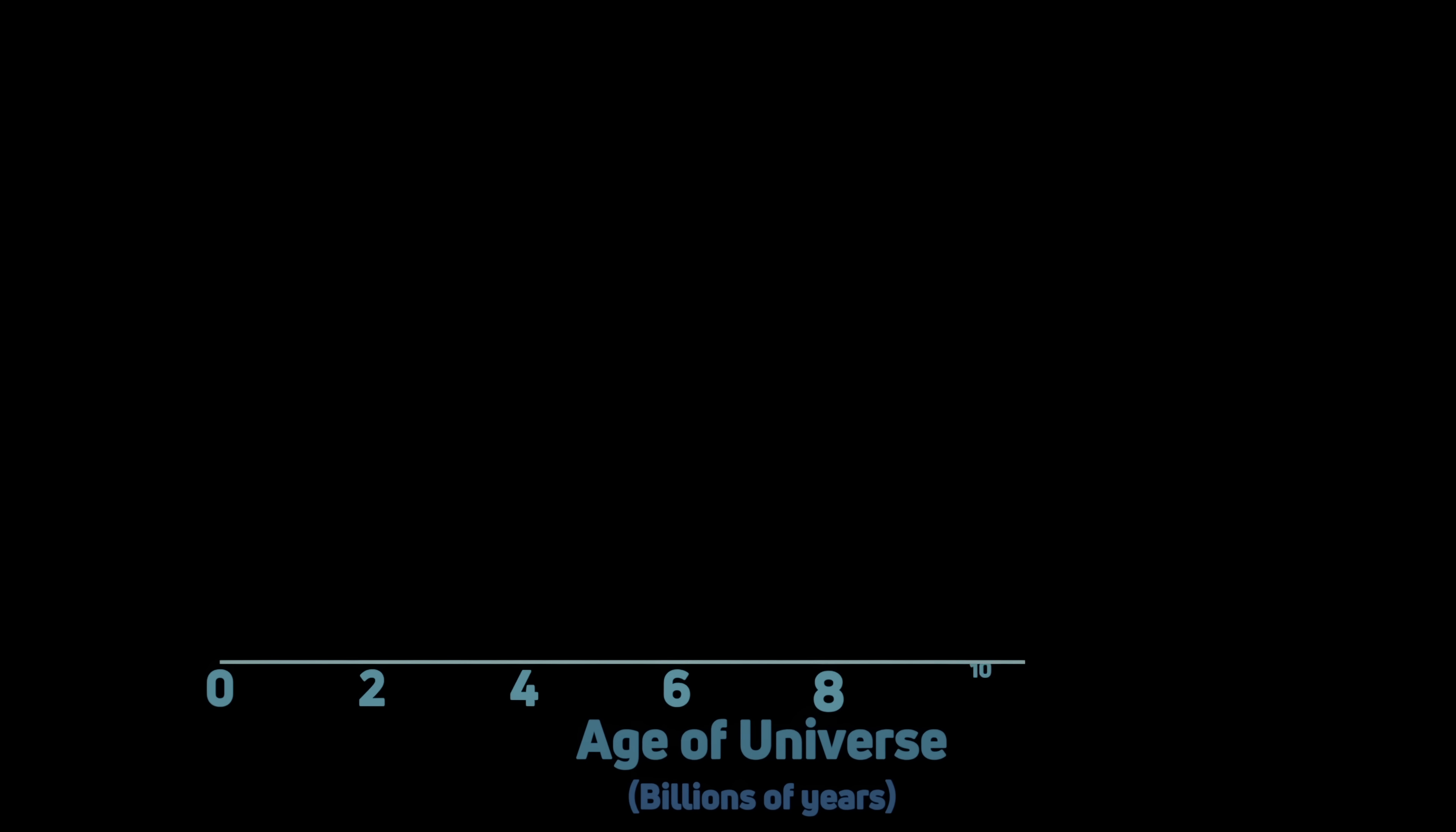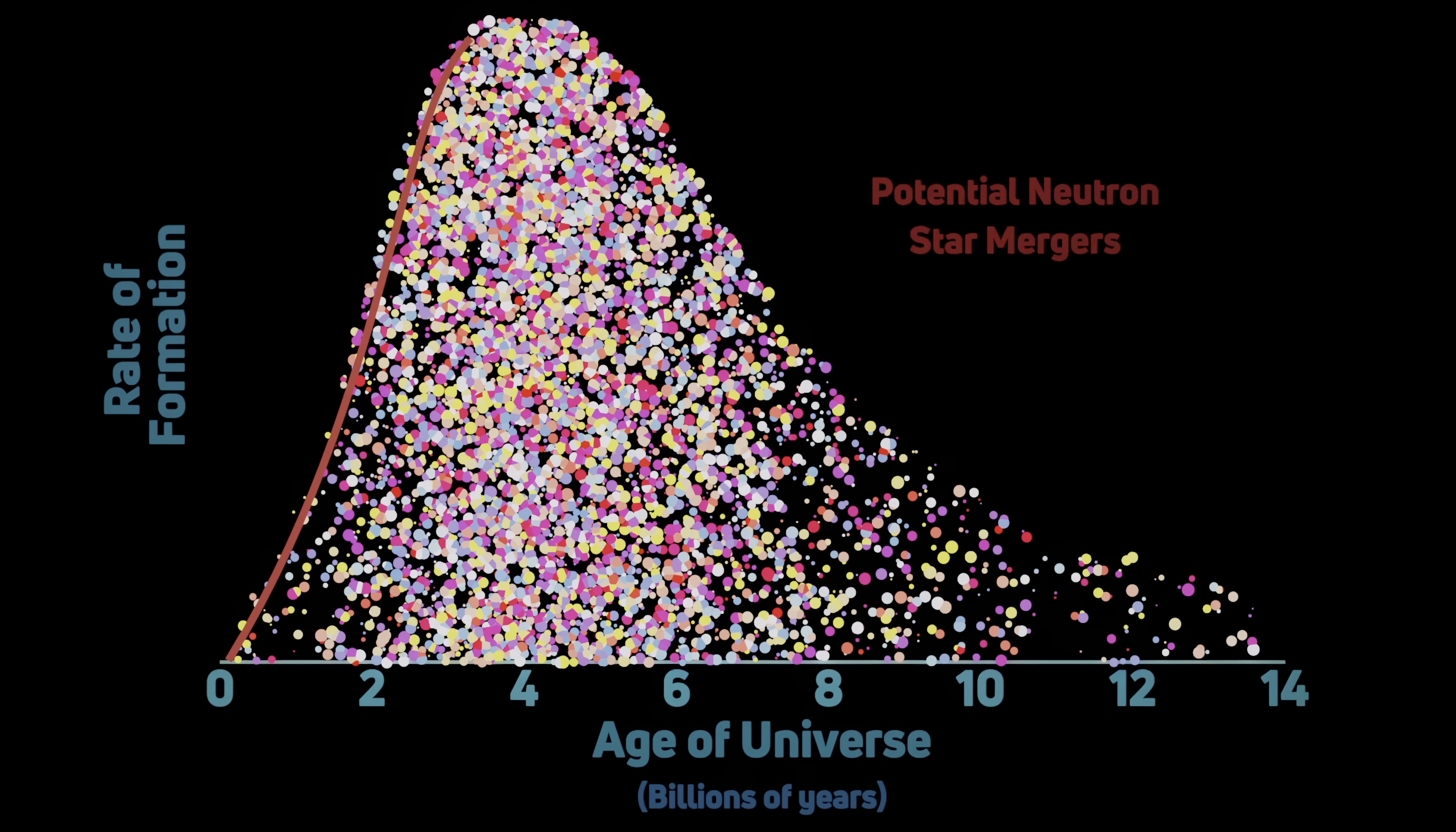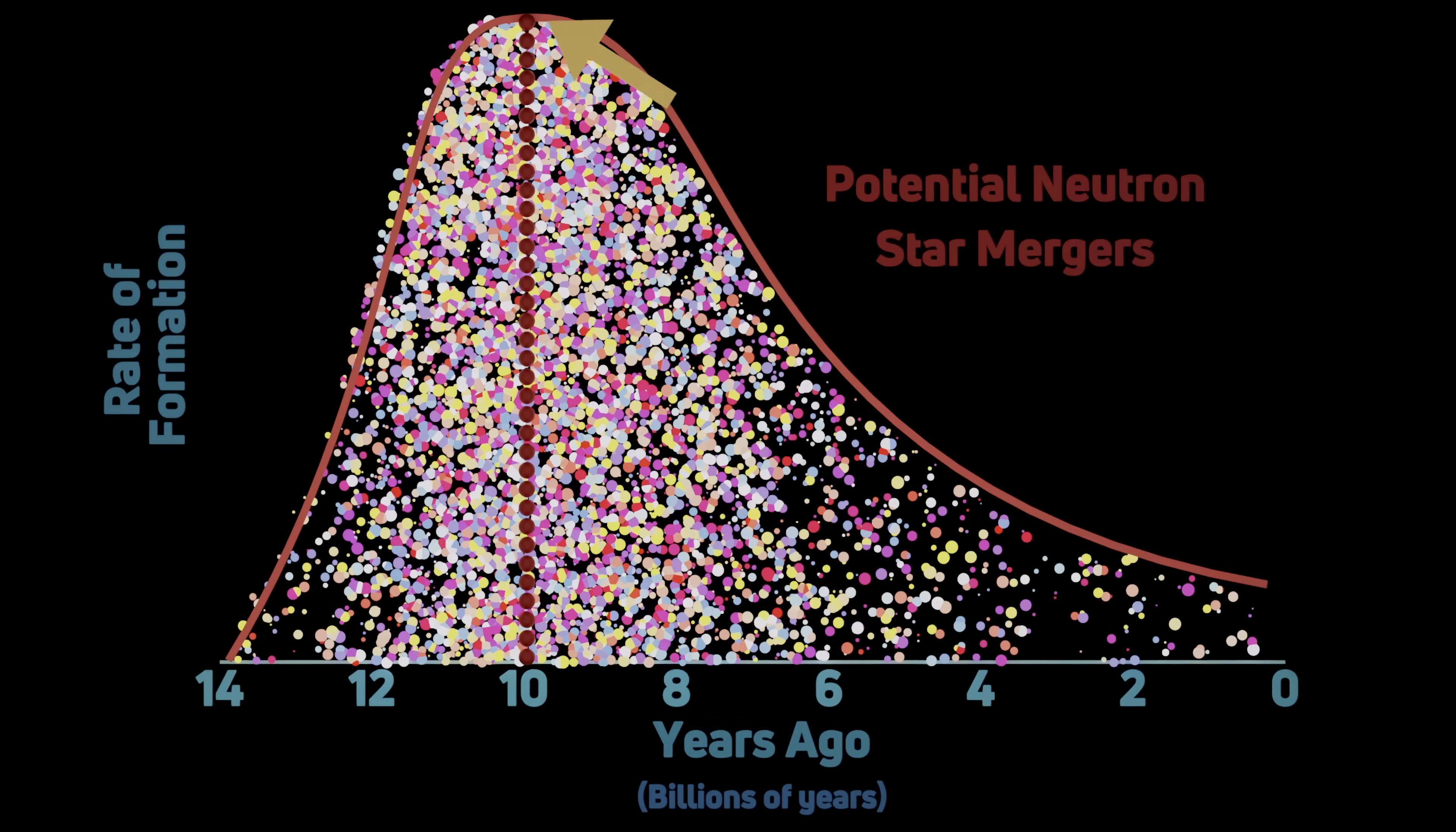However, we expect the rate of neutron star mergers will follow the history of star formation in galaxies, with a few hundred million or so year delay for those stars to die and spiral into each other. In a galaxy like the Milky Way, this means that peak R process production by neutron star mergers should have occurred about 10 to 11 billion years ago and tapered off to a rate about 10 times less in the present day as star formation diminishes.